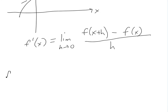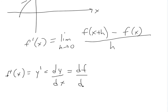Some other notations you could write: you could write f of x prime, or y prime, or f prime of x. You could even write it as dy over dx — just consider it the same, not a ratio; I'll show you later why this is useful. You could also write df over dx, or d over dx of f of x, or d of f of x.